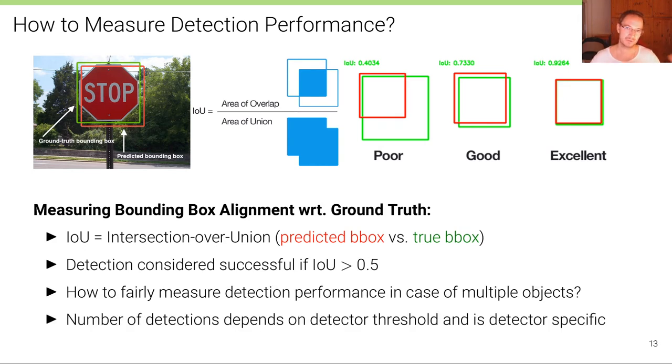Now this is all good for a single object. But how can we fairly measure detection performance in the case of multiple objects? That's not as easy as the number of detections depends on the detector threshold and is detector specific. Remember that the object detector outputs a set of boxes with associated semantic class labels or object category and also a confidence score per box.